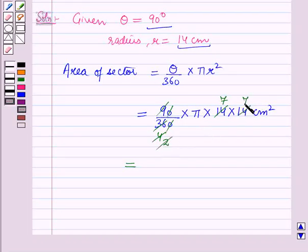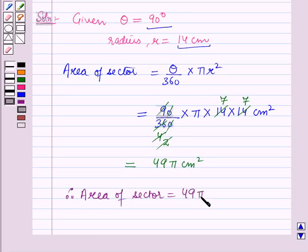Further, 9 may be cancelled with 36, giving 9 × 4 = 36, then 2 × 2 = 4, and 2 × 7 = 14. Here again, 2 × 7 = 14. So this is equal to 49π cm².